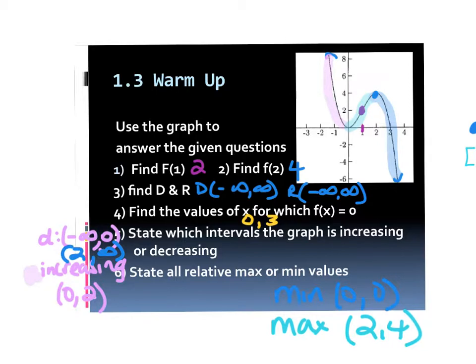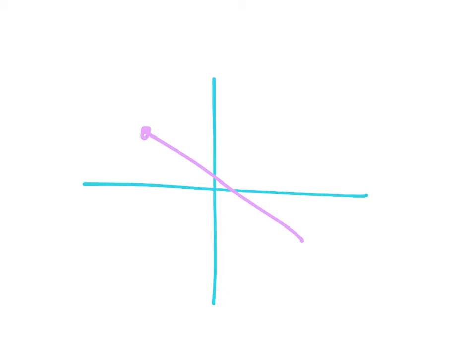Does the domain and range always have parentheses? No. Domain could have a bracket and a parenthesis, or even two brackets. Where there's an arrow, it's a parenthesis with an infinity. If it's a solid dot, it would be a bracket. If it was an open dot, then the domain would go parenthesis to bracket. It just depends on the graph.